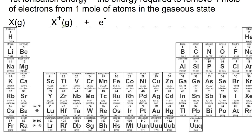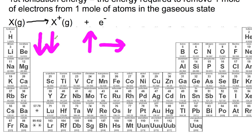The first ionization energy is the energy required to remove one mole of electrons from one mole of atoms in the gaseous state, represented by: X(g) → X⁺(g) + e⁻. Ionization energy decreases as you go down the group due to the shielding effect — outer electrons are not held as tightly by the protons because of the number of shells in between. It increases as you go across the period because of the increasing nuclear charge, which pulls outer electrons in more strongly.